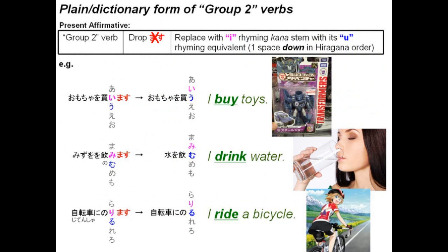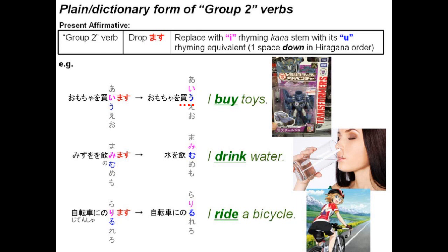Group 2: we drop the masu, and in the masu form all of these verbs have a kana that rhymes with i before the masu. So we drop that and replace it with a hiragana that rhymes with u — we go one space down in the hiragana order. For example, look at kaimasu. In the hiragana order: a, i, u, e, o. If we go down one space, we go from i to u, so kaimasu becomes kau.